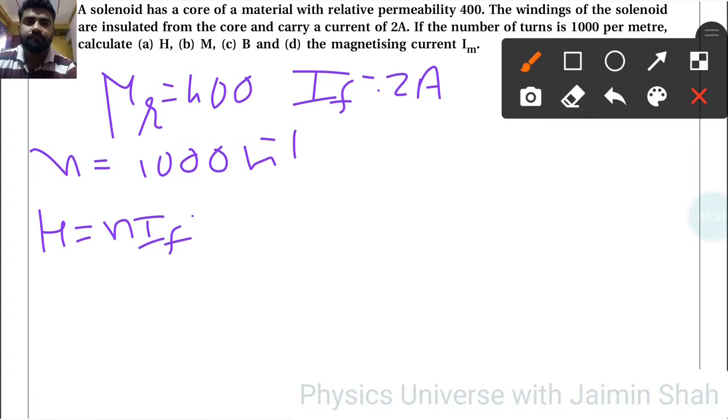H formula is nI, so 1000 into 2 = 2000 A/m.